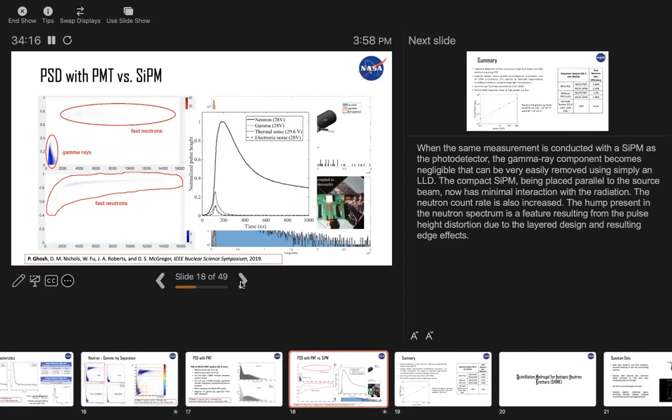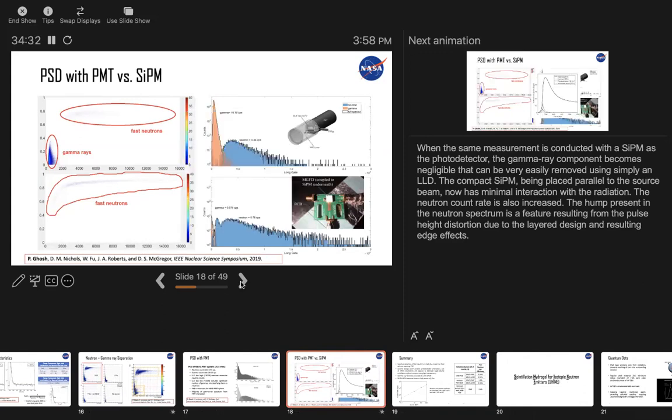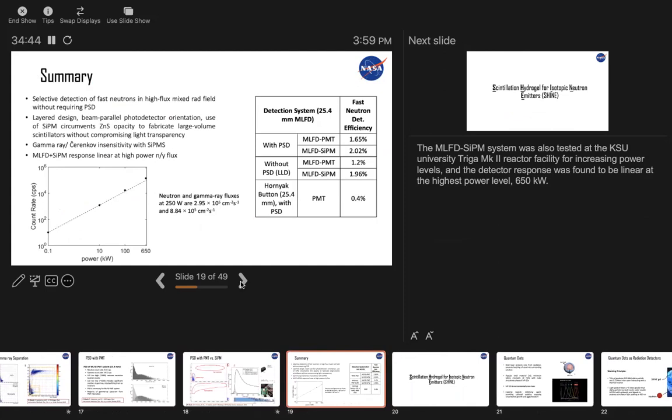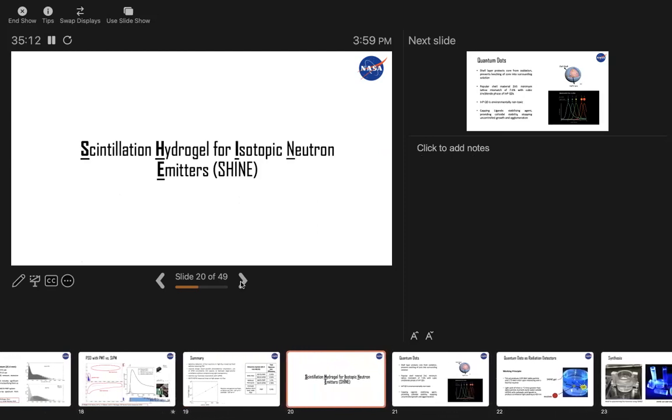So in conclusion, for using the detector with the photomultiplier tube, it is evident that a lot of contribution is actually from the PMT itself. So we decided either pulse shape discrimination will be necessary, or we could replace the photomultiplier tube with silicon photomultiplier or SIPM. And we can see that with the SIPM, the gamma ray band has completely disappeared. And the neutron contribution has also significantly increased. So this detector is inherently gamma ray blind just by applying a small LLD. Finally, we tested this detector at our university's research reactor, which has a maximum power of 650 kilowatts. And the detector response was fairly linear.